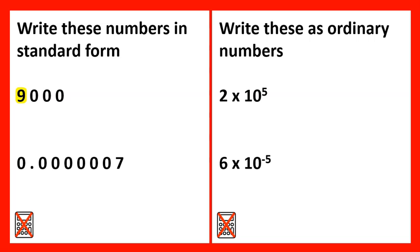The front number uses the significant figures at the beginning of the number and has to be between 1 and 10. And then we always multiply by 10 to the power of how far the decimal point has moved, left or right. This will be positive for big numbers and negative for small numbers.